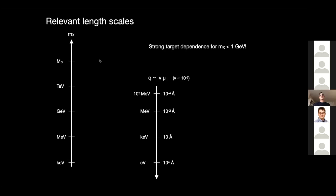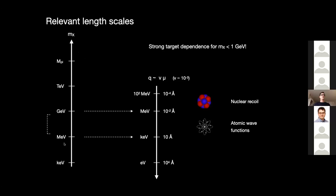Anything above a GeV basically maps onto a relatively narrow momentum range, because we're always sensitive to the reduced mass rather than the mass of the dark matter — that gives you the nuclear recoil. In the intermediate regime, momentum transfers of order 10 Å down to 10⁻² Å make you sensitive to atomic or Bloch wave functions if you're working with a crystal, and you do electron recoils.